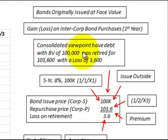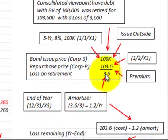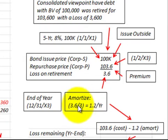From the consolidated viewpoint, you have debt with a book value of $100,000, and it was retired for $103,600, so that is the loss we would recognize from the consolidated viewpoint. We also have to amortize this loss, and we'll use the straight-line method. We had the $3,600 and there are three years remaining on the bond, giving us $1,200 per year.